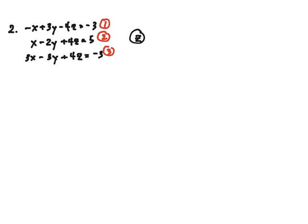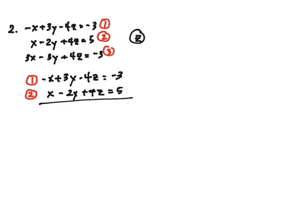Okay, so let's go ahead and pair up equations 1 and 2. So I have negative x plus 3y minus 4z equals negative 3, and x minus 2y plus 4z equals 5. Make sure that I wrote both of the problems out right.